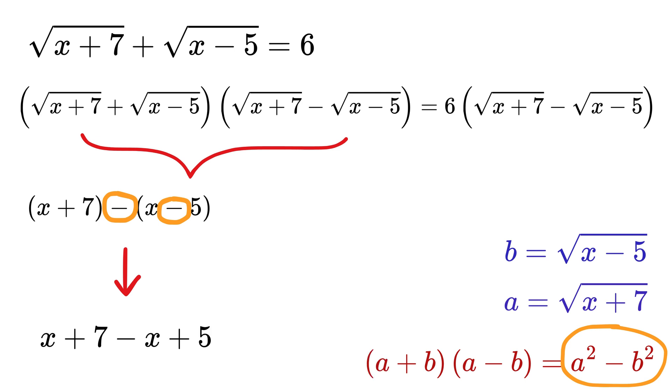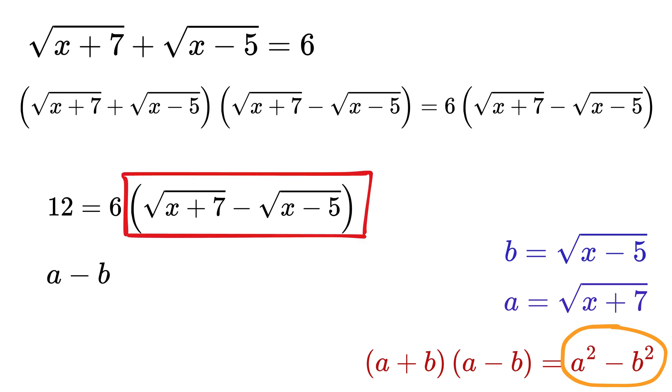Hey, x cancels out, and we are left with 12, and that equals 6 times this. So a - b equals 12 over 6 or 2. a + b is 6, and a - b is 2.